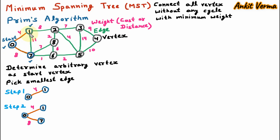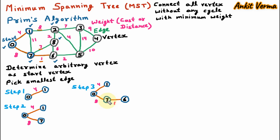From these vertices we see where else we can reach. From vertex 1 we can reach vertex 2, and from vertex 7 we can reach vertices 8 and 6, with weights 8, 7 and 1. The minimum weight is 1, so we pick the edge between vertex 7 and 6. In step 3, one more edge is added and we have traversed vertex 6. Traversed vertices are now 0, 1, 7 and 6.